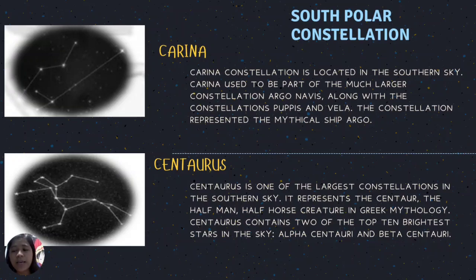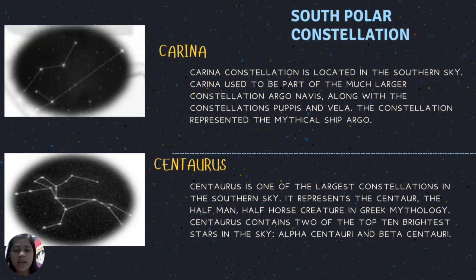Some south polar constellations include Carina, Centaurus, and Crux. Carina is located in the southern sky and used to be part of the much larger constellation Argo Navis, along with the constellations Puppis and Vela — they represented the mythical ship Argo. Centaurus is one of the largest constellations in the sky.